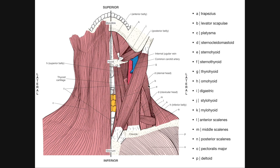Anterior to the levator scapulae we have the scalene muscles. Letter L, directly posterior or deep to the sternocleidomastoid clavicular head, is our anterior scalene. Going directly backwards to M is the middle scalene. Then N is the posterior scalene. Between the anterior and middle scalenes is the interscalene space, where the brachial plexus and subclavian artery pass through. Letter O is pectoralis major; P is the deltoid.